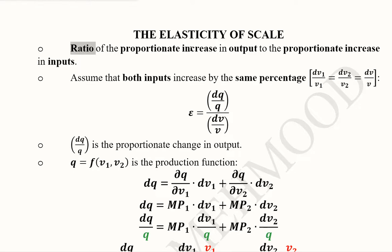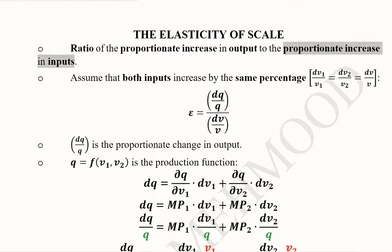It is basically a ratio — just like every elasticity is the ratio of the percentage change in the dependent variable and the independent variable. Here the dependent variable is the output and the independent variable is the input. We divide their proportionate increases: the proportionate increase in output divided by the proportionate increase in inputs.